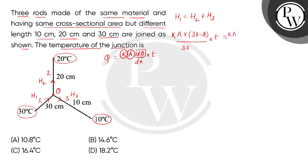Rod 2 में heat flow: K × A × (θ − 20) / 20 cm × t. And rod 3 में temperature difference आएगा (θ − 10), so H3 = K × A × (θ − 10) / 10 cm × t.